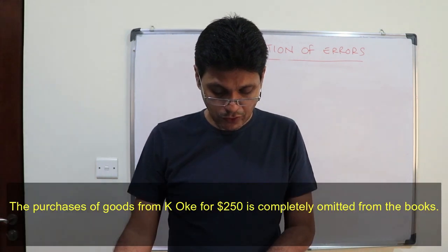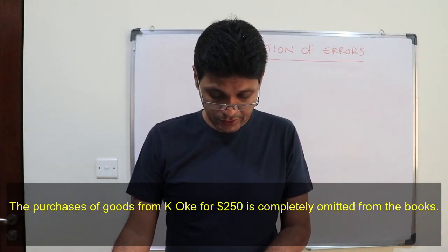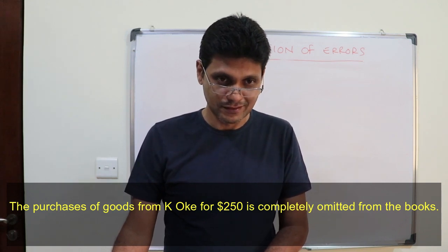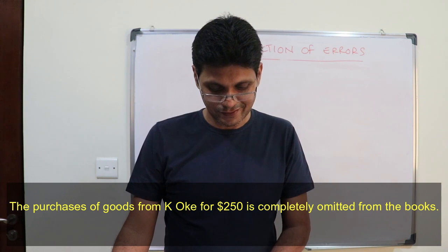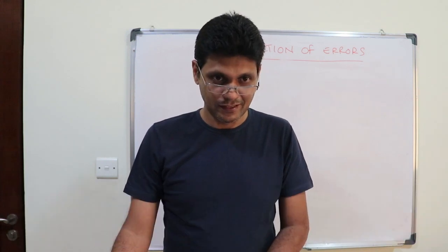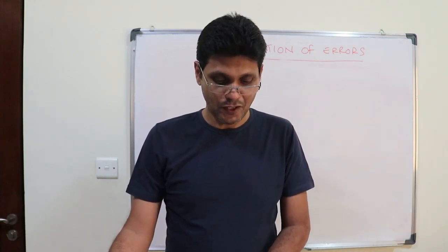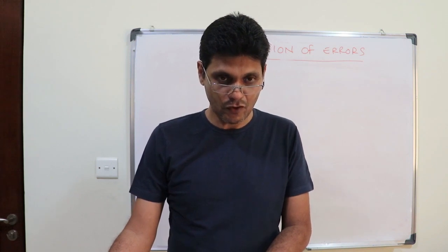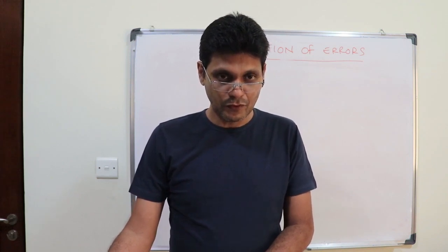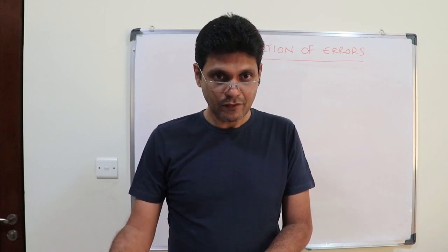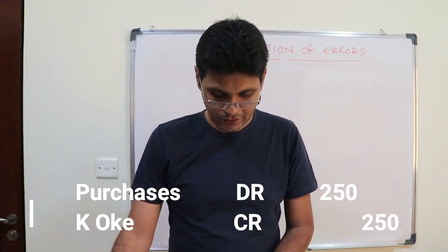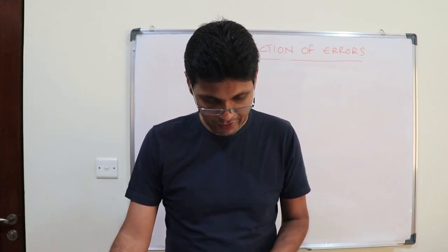Next one: the purchase of goods from K-orc for two thousand five hundred dollars is completely omitted from the books. So it's an error of omission. To record this — to rectify this — record the transaction: debit purchases and credit your supplier.